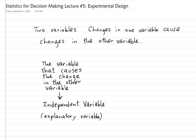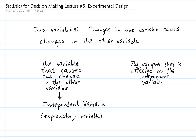And then the variable that is affected by the independent variable is called the dependent variable. That has another less common name which is response variable.